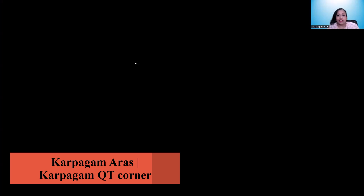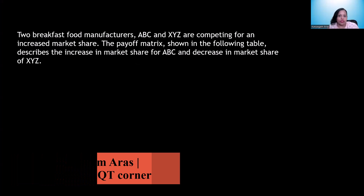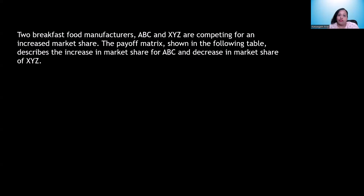How would you identify the given problem as a mixed strategy? First, we will go ahead and find out the row minima and the column maxima. If there is no saddle point, then clearly it indicates that we need to use a mixed strategy. Now let's look at a specific problem.